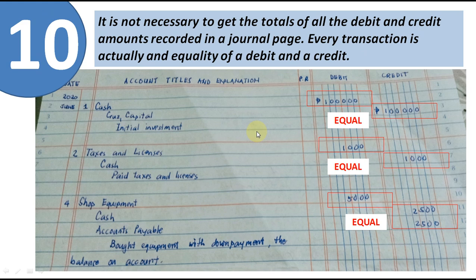It is not necessary to get the totals of all the debit and credit amounts recorded on a journal page. Every transaction is an equality of a debit and a credit. In double-entry bookkeeping, debit and credit must be equal for each transaction, so there is no need to add up the totals of the entire debit and credit columns.